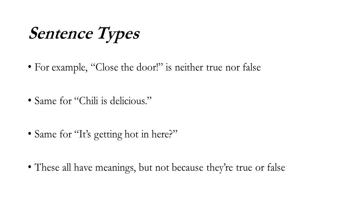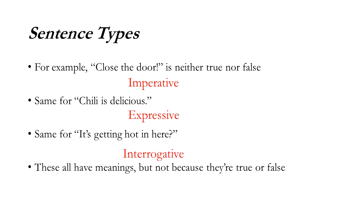We like to spend time talking about different sentence types because not all sentences are descriptive. Some don't have anything to do with truth at all, but they still have meaning. Here are some examples: 'Close the door' — it's neither true nor false, it's a command. 'Chili is delicious' — I'm just expressing my love of chili, not describing a fact. 'It's getting hot in here?' — this is a question. None of these are true or false. The first is imperative or command, the second is expressive, and the third is interrogative. Part of the reason they have meaning independent of truth stems from their specific syntax — the exclamation point indicates imperative, the question mark for interrogatives is a syntactic way to indicate it's not a description.